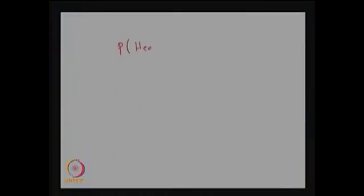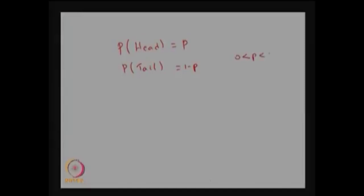Consider a random experiment of tossing a coin infinitely many times. In each trial there are two possible outcomes, namely head or tail. Assume that the probability of head is P and the probability of tail occurring in each trial is 1-P, where P lies between 0 and 1.